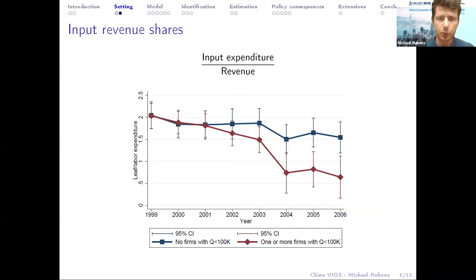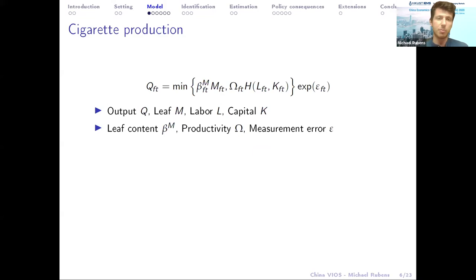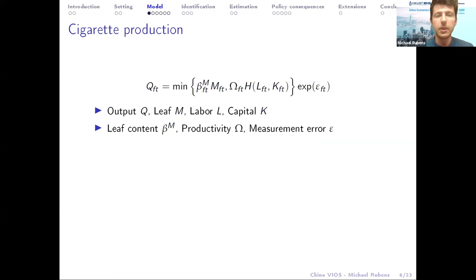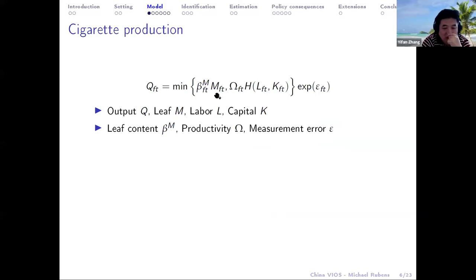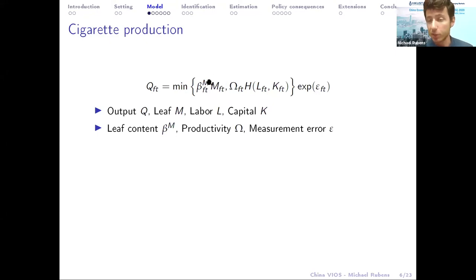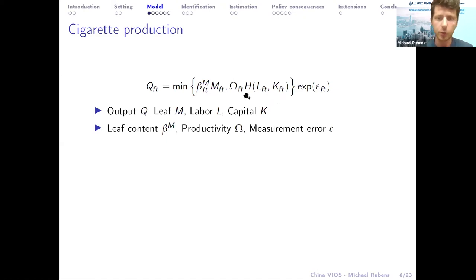Let me walk through the model. The model has two components: a production function and a model of how these firms compete on their input markets. The key thing is that there is a subset of inputs that is not substitutable — in this case, tobacco leaf. So there is a Leontief production function between intermediate inputs and then labor and capital: firms can substitute between labor L and capital K but they cannot substitute between materials and labor.